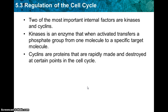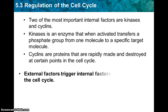There are two important internal factors: kinases and cyclins. A kinase is an enzyme that, when activated, transfers a phosphate group from one molecule to a specific target molecule. Cyclins are proteins that are rapidly made and destroyed at certain points in the cell cycle. These two factors help a cell advance through different stages of the cell cycle when they bind to one another. External factors will trigger internal factors, which then affect the cell cycle.